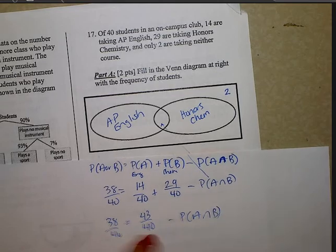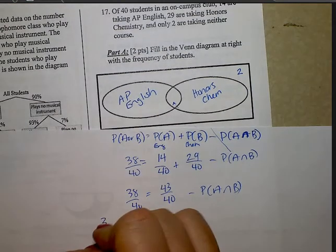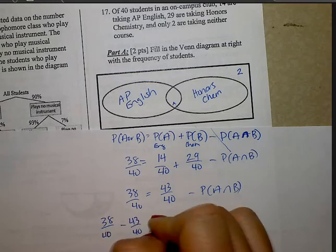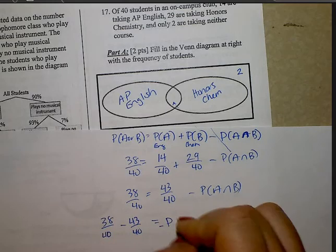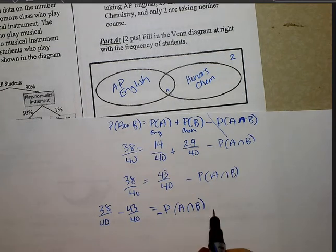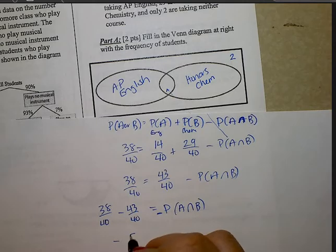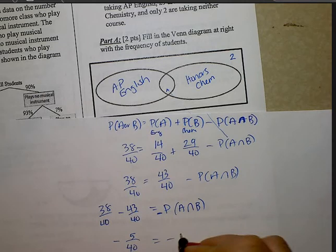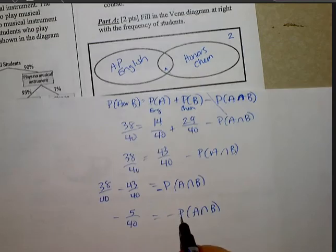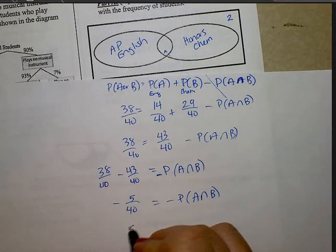Subtract this to the opposite side. So I have negative probability of A and B equals negative 5 over 40. Remember when you have that negative on both sides, you divide both sides by a negative 1, and we end up with 5 over 40.